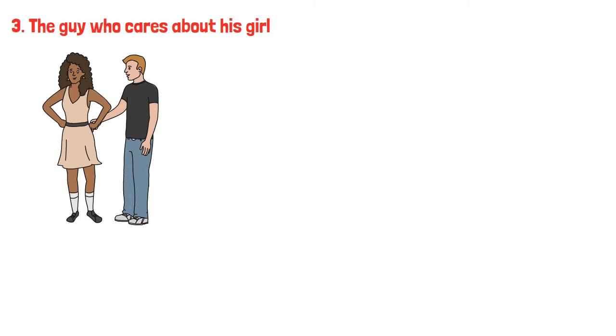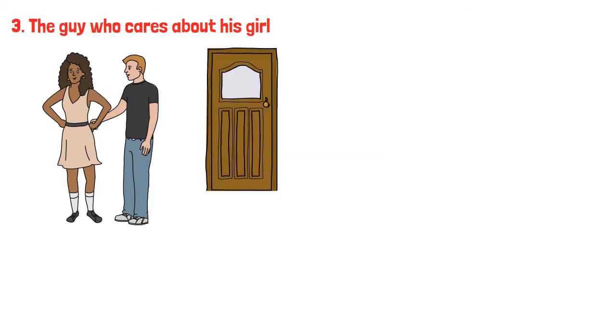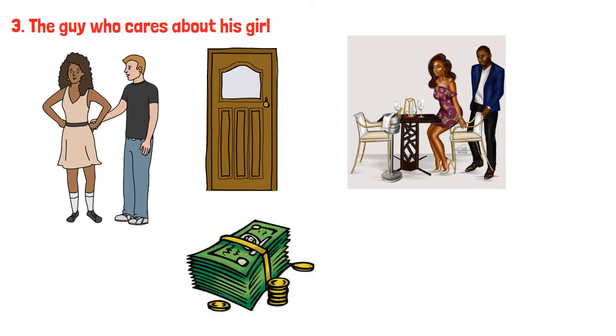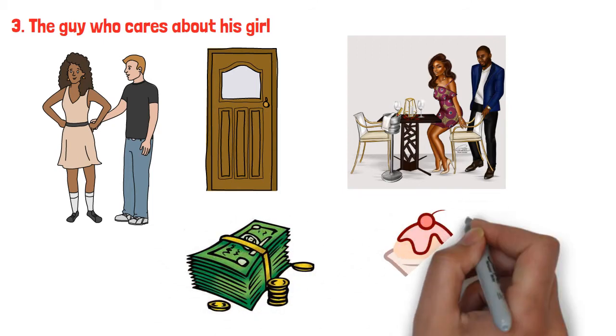Some smart dudes know how to impress attractive girls. They make sure their girl is feeling relaxed in their company. They do all that's in the chivalrous gents' playbook, like opening doors and pulling out chairs for their girl whenever they can. They don't have any problem paying the bill when they dine out, and they make sure to offer her dessert.